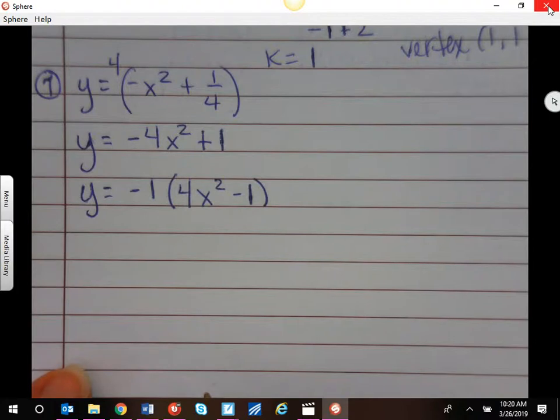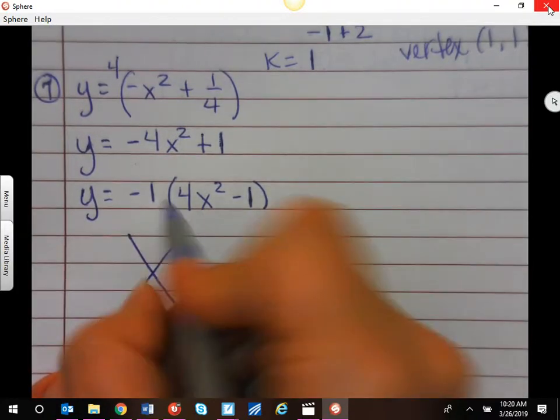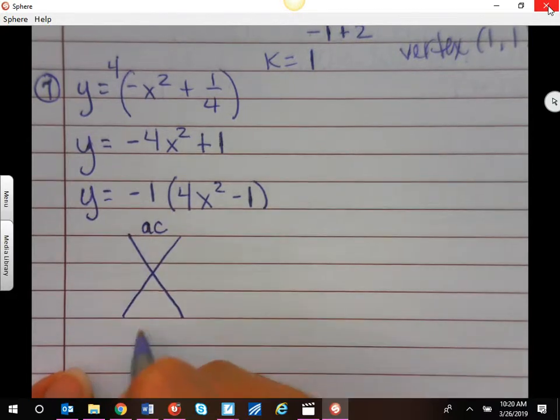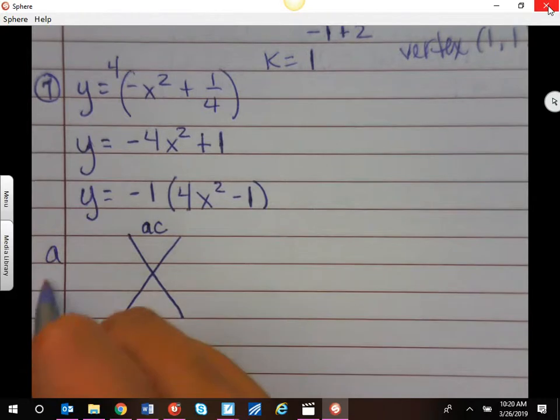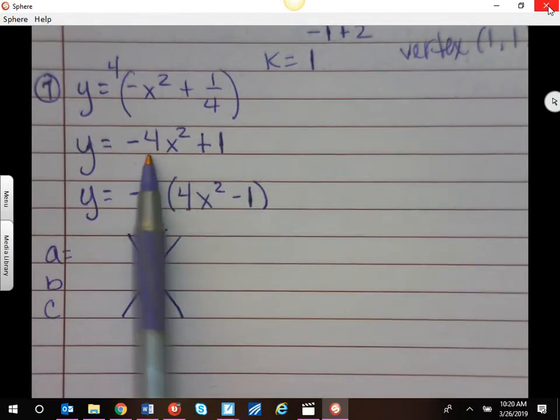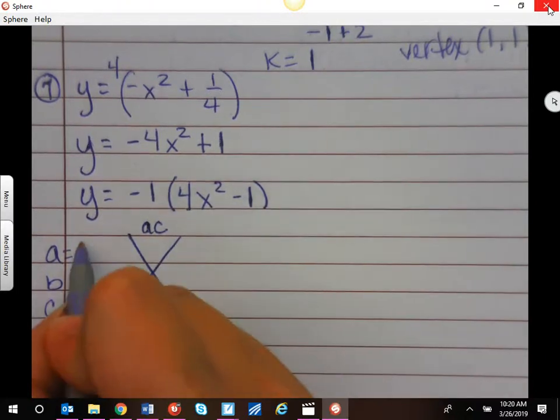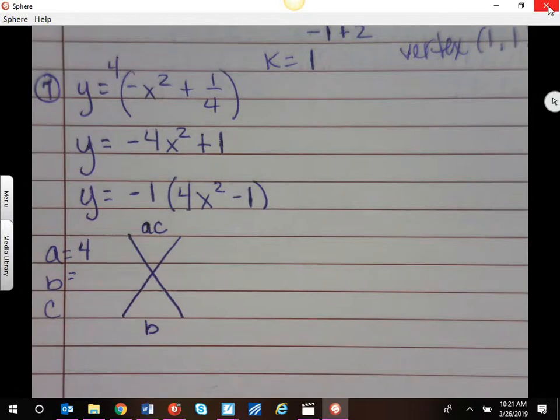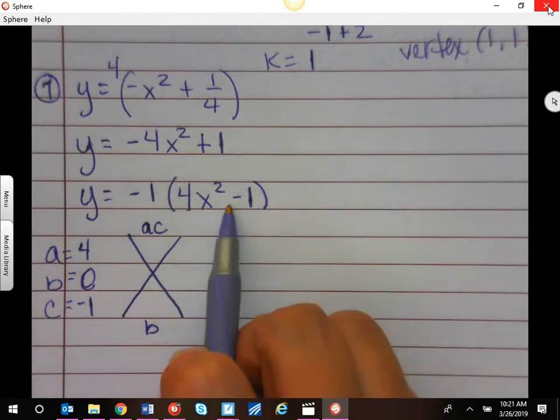Are we good so far? Alright, so I'm going to do my cross puzzle. Now be careful, remember in our cross puzzle we have a, c, and this is b. So if I listed a and b and c, what is a? 4, what's b? Be careful. No, not negative 1, that's c. 0 is b, we don't have an x number here.